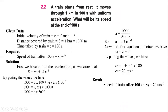Next we have exercise problem 2.2. A train starts from rest and moves through 1 km in 100 seconds with uniform acceleration. What will be the speed at the end of 100 seconds? Given data: the train starts from rest, so the initial velocity Vi = 0. It moves through 1 km, which is 1000 meters. Time is 100 seconds. We need to find the final speed at the end of 100 seconds.